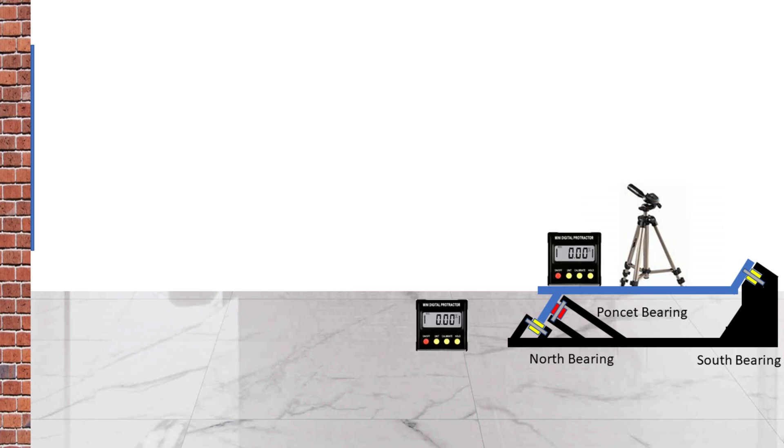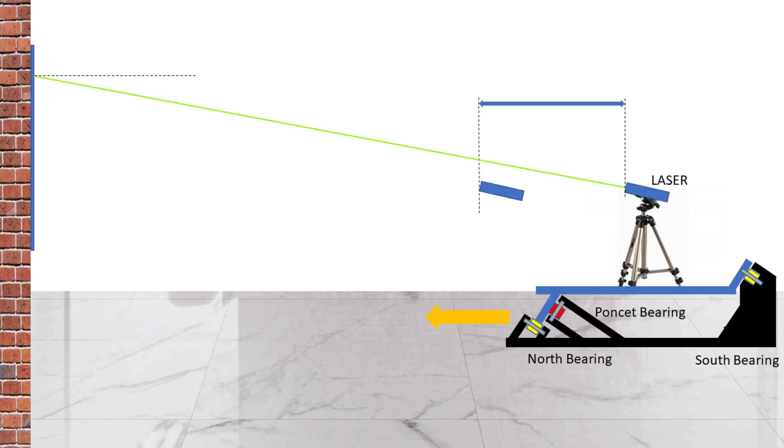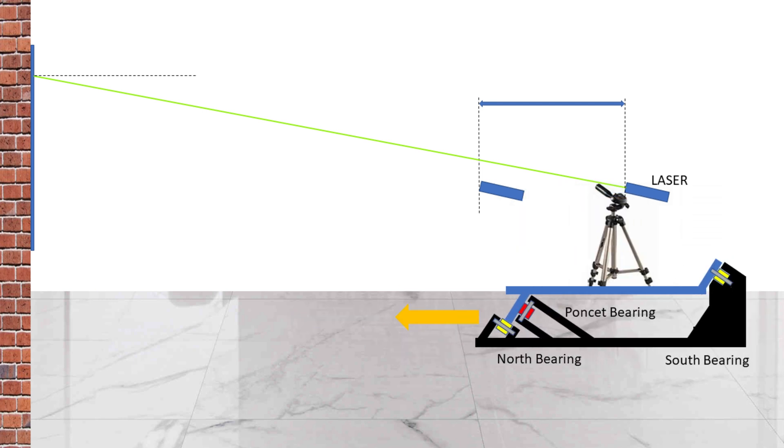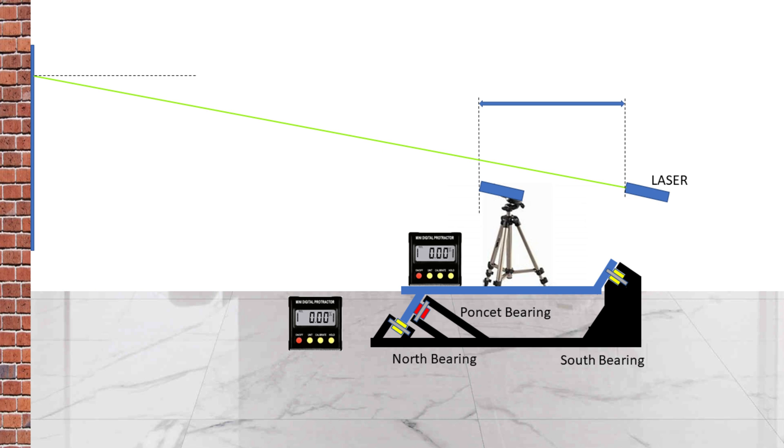We will first ensure the floor is level, and also ensure the same level is used for leveling the equatorial platform so it's exactly parallel to the floor. Then we will fire the laser and mark the points where it's pointing. Next we will move the platform by a known distance, ensuring it doesn't rotate along the vertical plane. Finally, we will fire the laser again, do the markings, and take measurements needed for calculation.